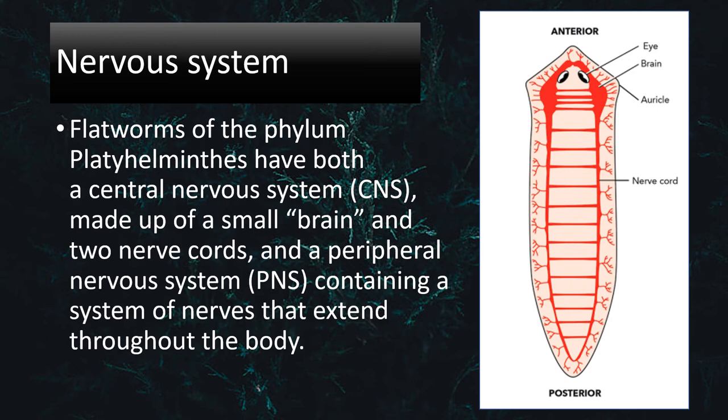Now let's look at the nervous system. Flatworms of the phylum Platyhelminthes have both a central nervous system, made up of a small brain and two nerve cords, and a peripheral nervous system containing a network of nerves that extend throughout the body.